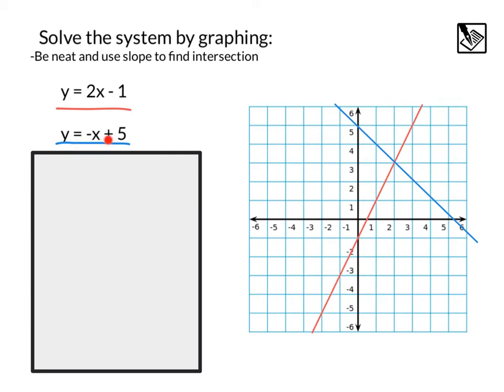Second line — the blue one — y equals negative x plus 5, with a y-intercept of 5 and a slope of negative 1 over 1, applied repeatedly. The point of intersection is our solution, and that looks like the point (2, 3).